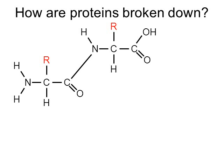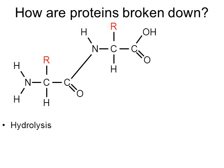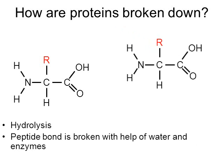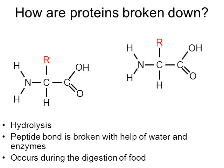The opposite of a dehydration synthesis reaction is a hydrolysis reaction. For example, two amino acids that are bonded together can be broken down with the addition of water and the help of a type of protein called an enzyme. That peptide bond is broken with water and an enzyme. This occurs during the digestion of our food — our digestive system will break proteins down into smaller amino acids, which can be used for energy.